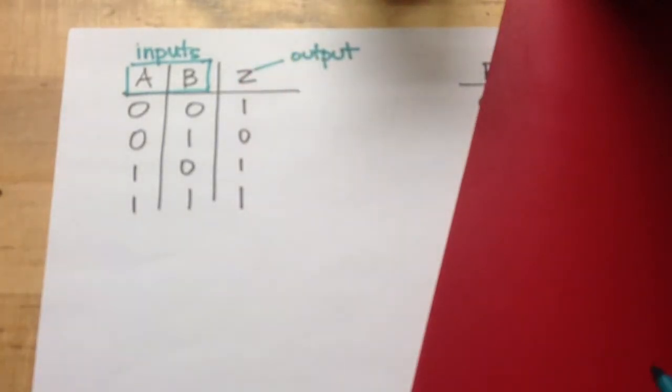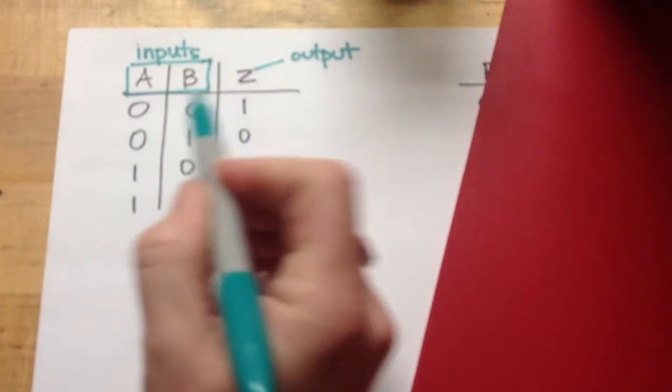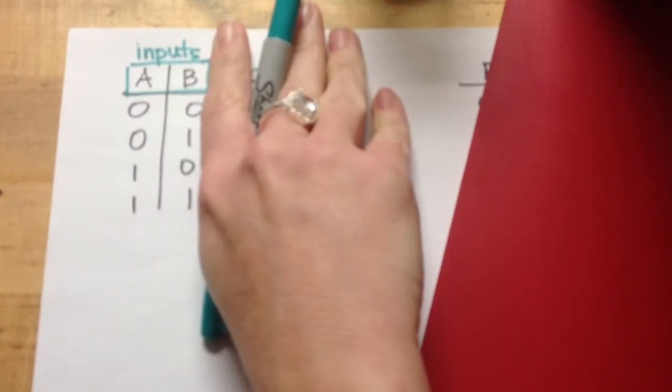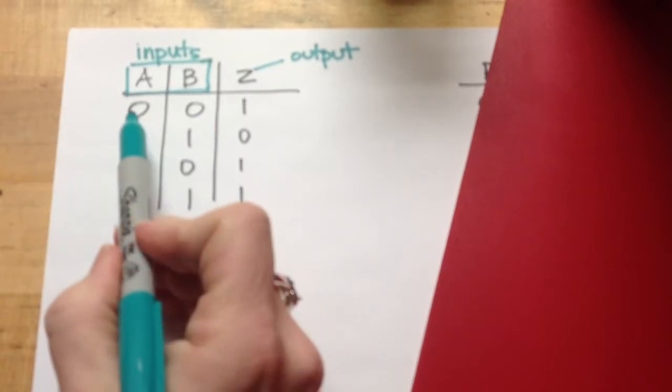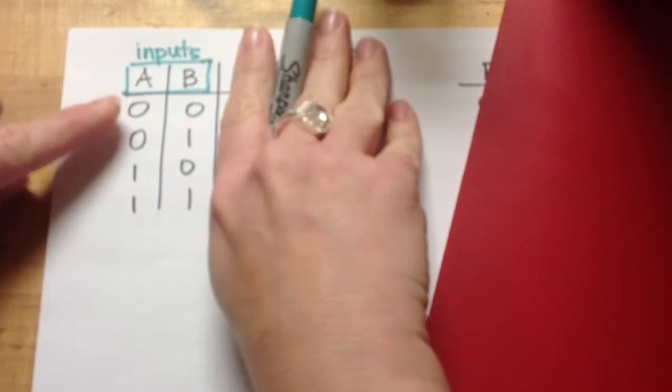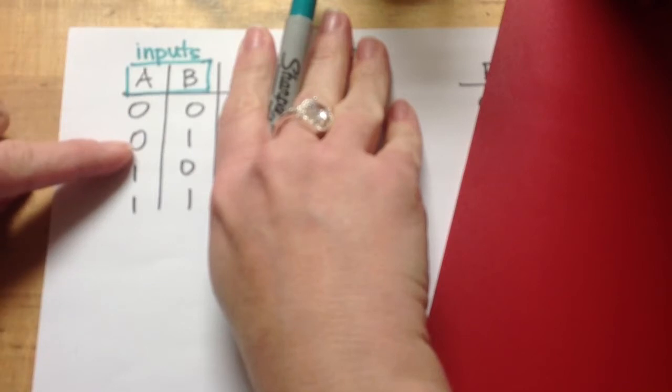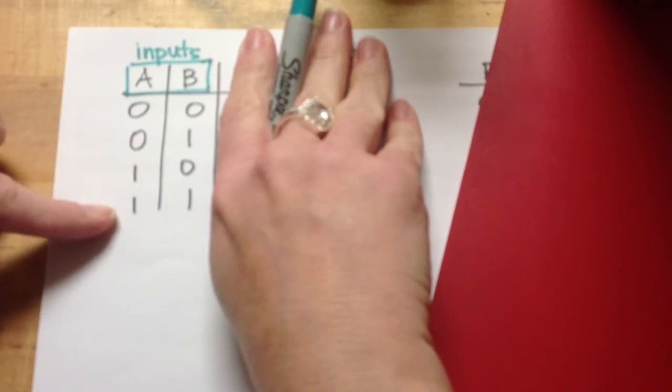So my inputs literally, if you just look at them individually, they simply count in binary. So the first line is 0, then this is 1, then this is 2, then this is 3.